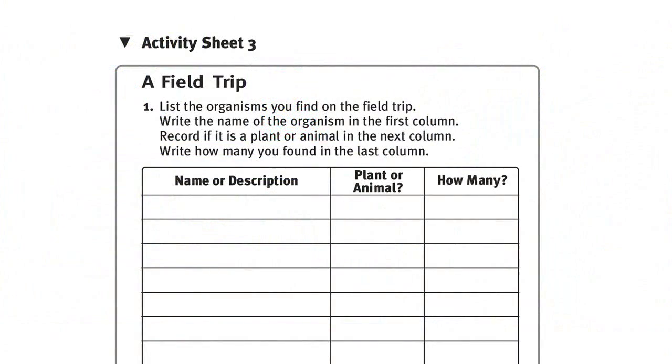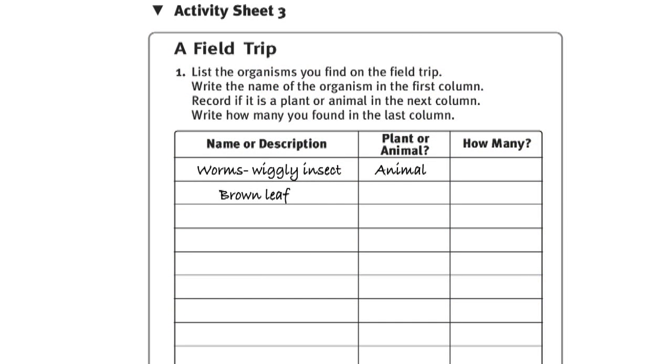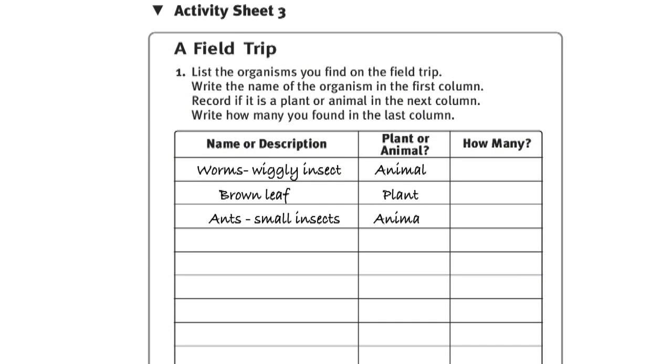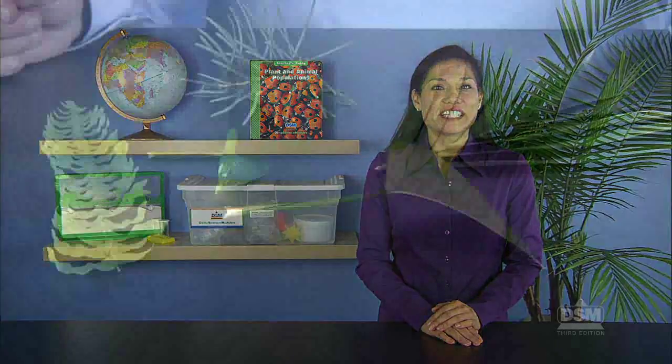Explain that on this field trip, their task is to list and count as many different kinds of plants and animals as they can find in a particular area. Distribute a copy of Activity Sheet 3 and a pencil to each student. Discuss how they will count and identify different organisms. Suggest they make up names for unfamiliar organisms, or give them a number and jot down a brief description in the chart on the Activity Sheet. Tell them they may collect leaf specimens, but not insects or other animals, in their plastic bags, and bring them back to class for identification and comparison with other team specimens.